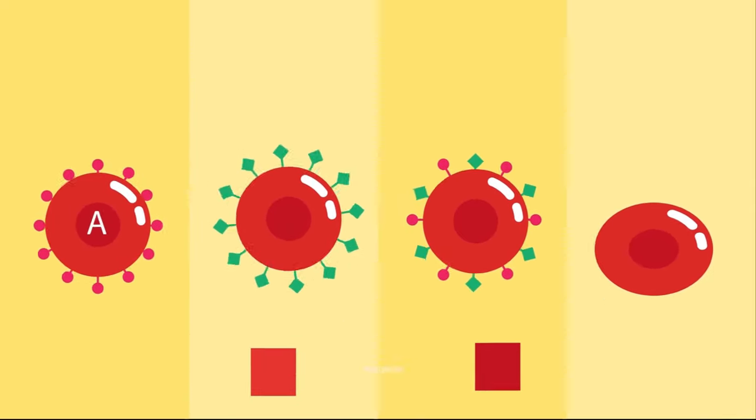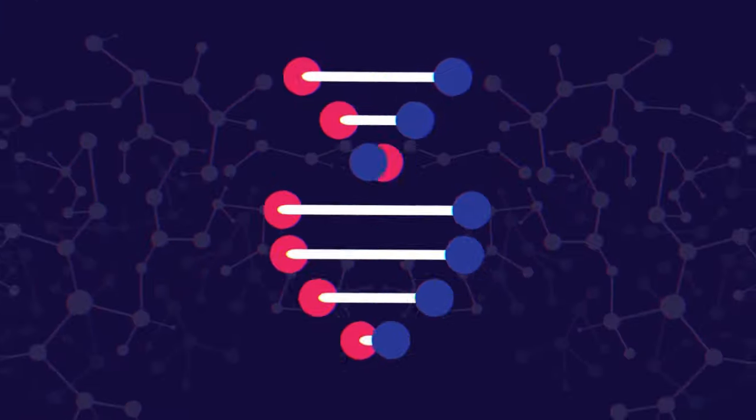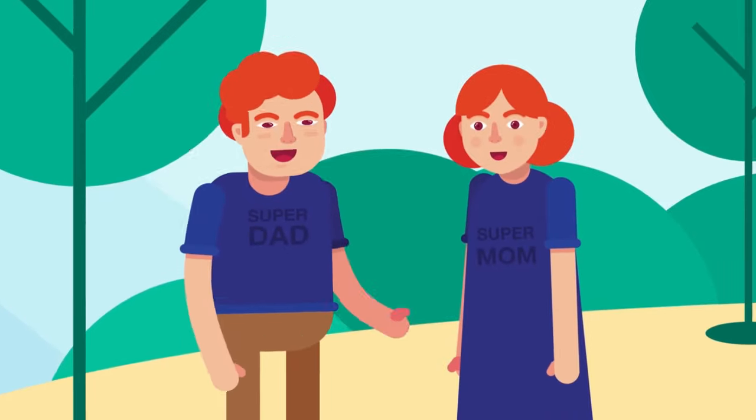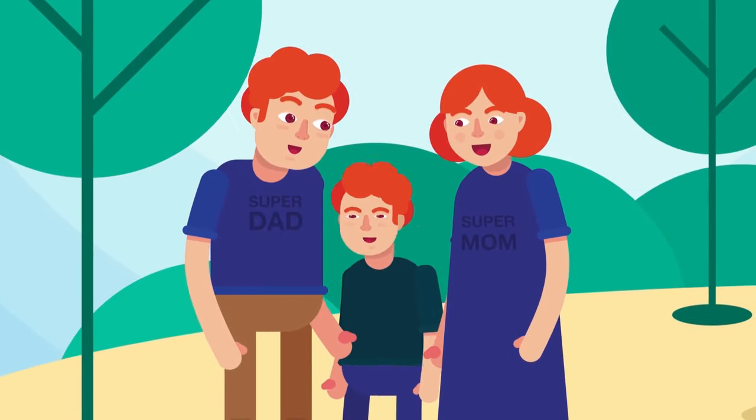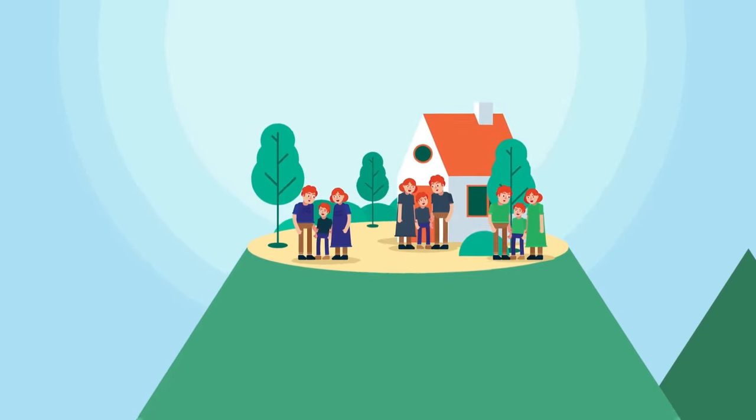There are four blood groups: A, B, AB and O blood groups. While blood types are 100% genetically inherited, the environment can potentially determine which blood types in a population will be passed on more frequently to the next generation.